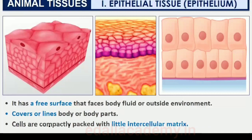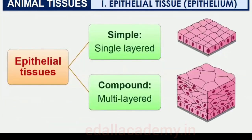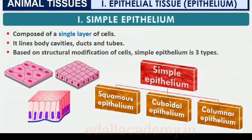Epithelial tissue, commonly referred to as epithelium (plural: epithelia), has a free surface which faces either a body fluid or the outside environment, thus providing a covering or lining for some part of the body. The cells are compactly packed with little intercellular matrix. There are two types: simple epithelium, composed of a single layer of cells lining body cavities, ducts, and tubes; and compound epithelium, consisting of two or more cell layers with a protective function as in our skin.